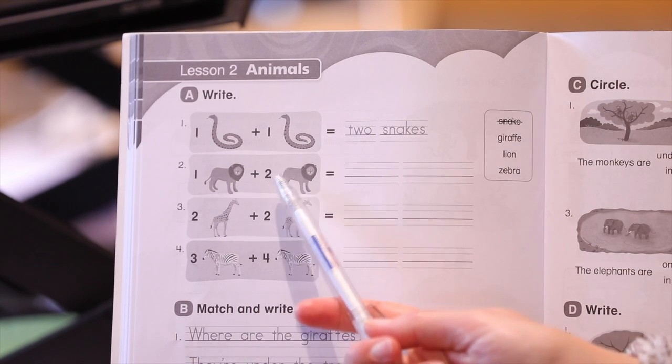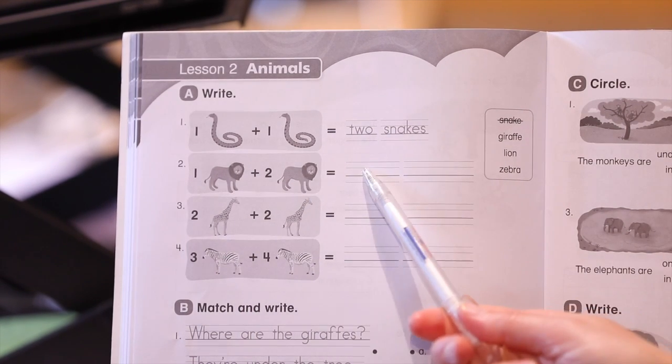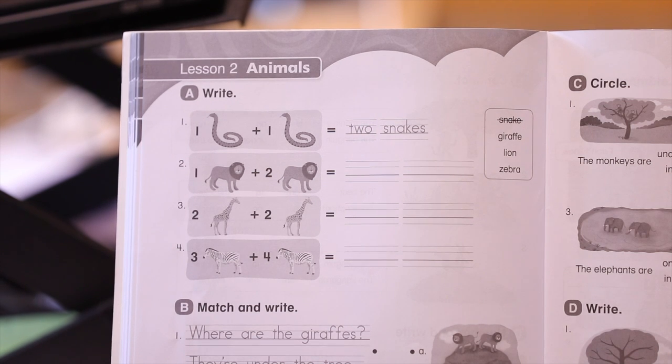One lion plus two lions equals three lions. Very good.